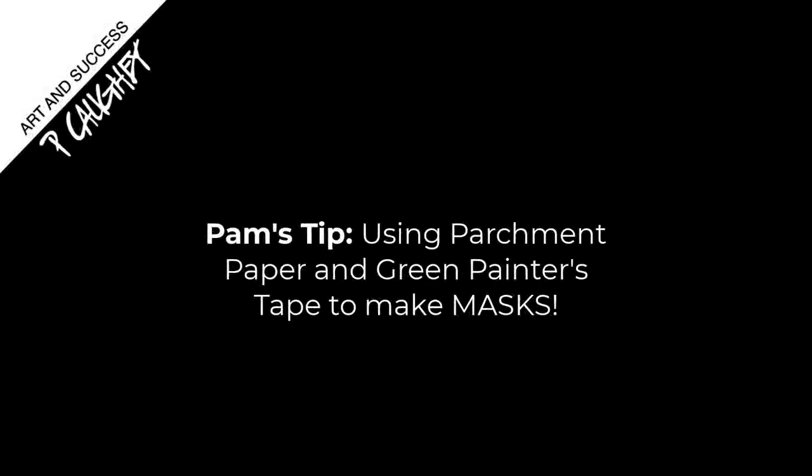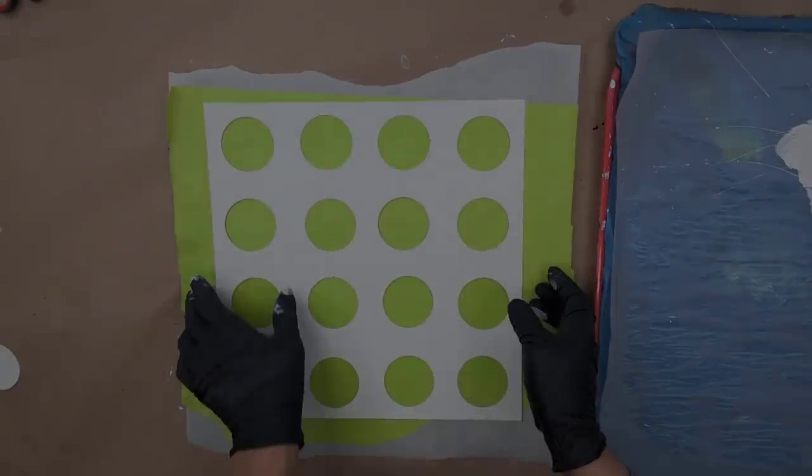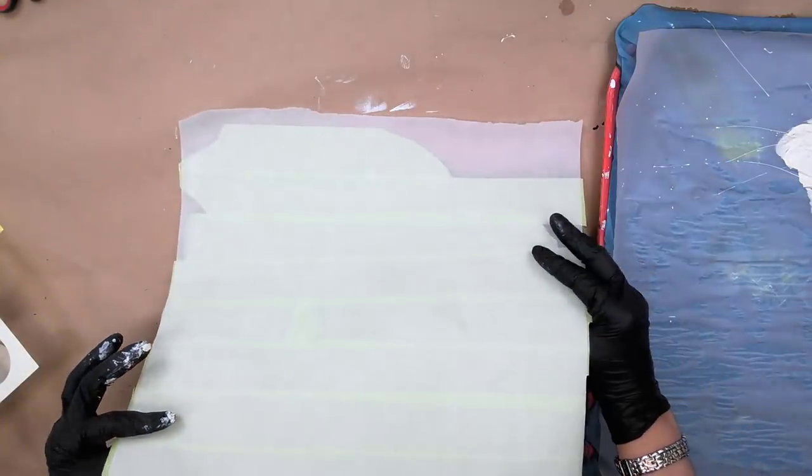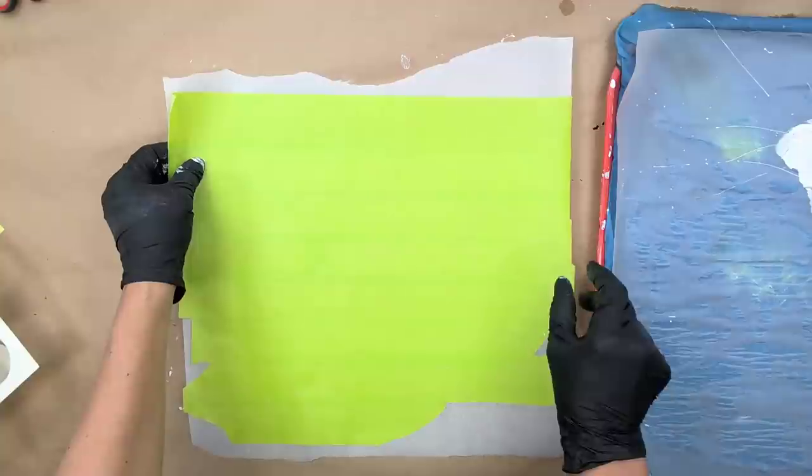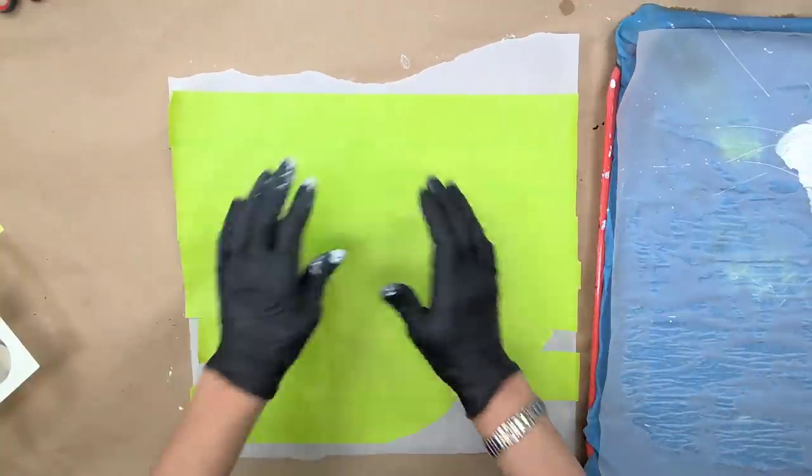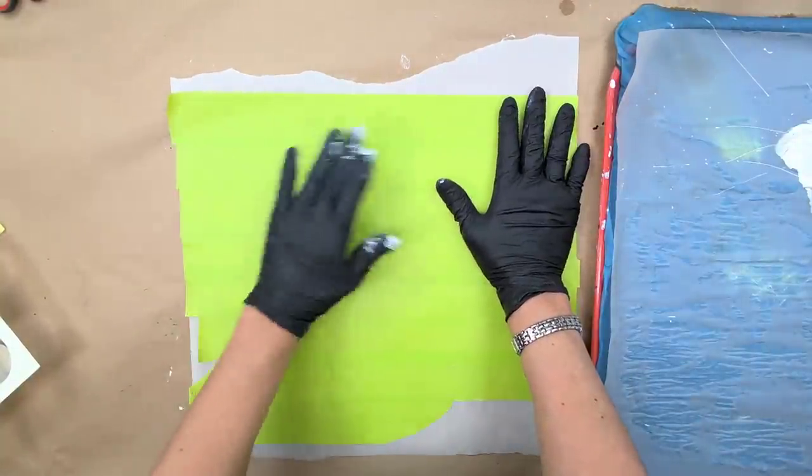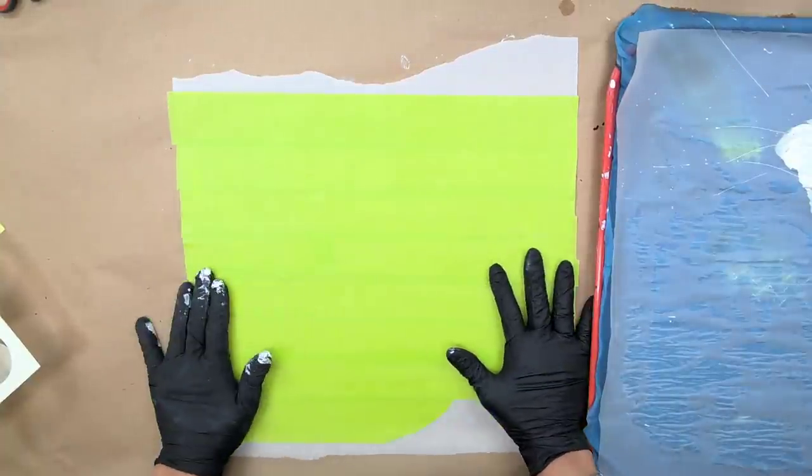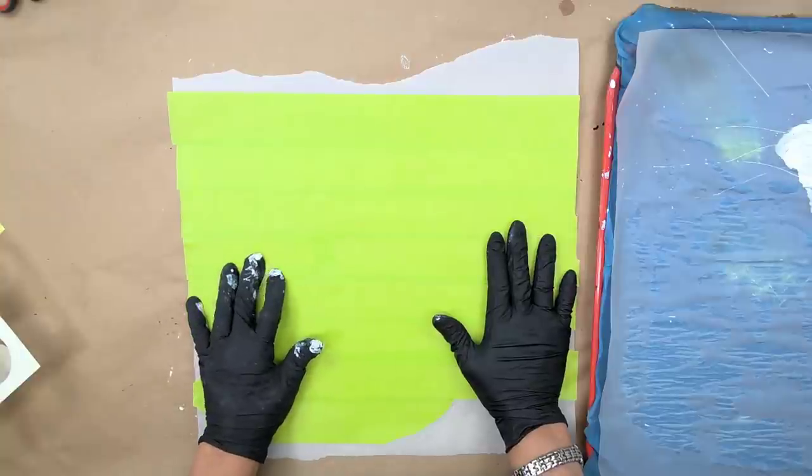All right, this is an experiment. What I did was I took some parchment paper, which is easy to come by at any grocery store, and I covered it with this green painter's tape. It doesn't really want to stick to the parchment paper, so it's going to be a really good release paper.